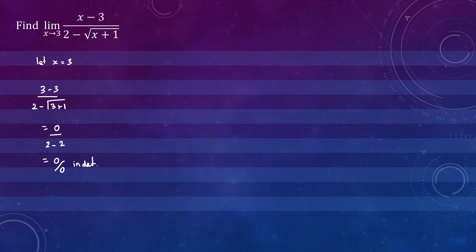That's telling us we need to do a bit more work to find the limit. Let's write down the limit again: the limit as x approaches 3 of x minus 3 divided by 2 minus the square root of x plus 1.